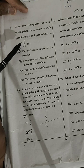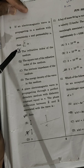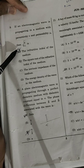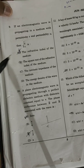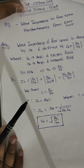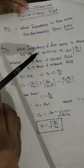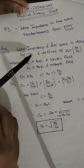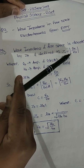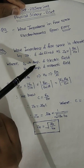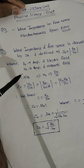Let's check this question. The topic is impedance matching in free space, which we have already studied in electrodynamics. Wave impedance in free space is denoted by Z0, and it is defined as Z0 = E0 upon H0, where E0 is the amplitude of the electric field and H0 is the amplitude of the magnetic field.